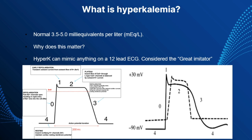5.1 to 6 is going to be mild hyperkalemia, 6.1 to 7 is going to be moderate hyperkalemia, and levels above 7 are going to show severe hyperkalemia.